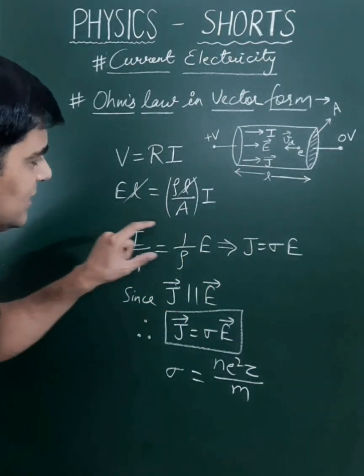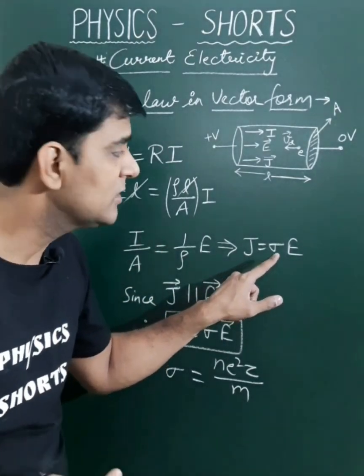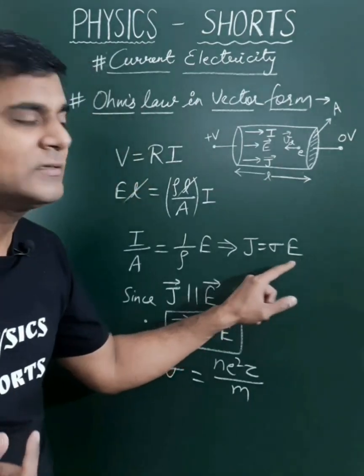This I/A is J. 1/ρ, the reciprocal of resistivity, is conductivity. So σ is conductivity and E is the electric field.